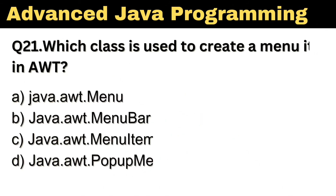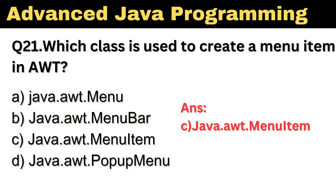Question number 21: Which class is used to create a menu item in AWT? The right answer is Option C: java.awt.MenuItem.